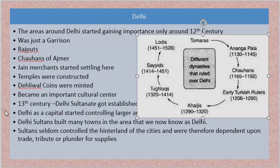When Delhi started controlling larger areas, it was becoming popular as an administrative region. Many small towns and forts were built in and around Delhi, and Delhi expanded from being a capital town to what we call a city. The Sultans seldom controlled the whole of India from Delhi.